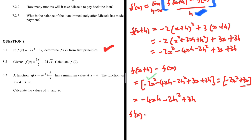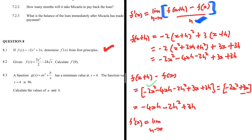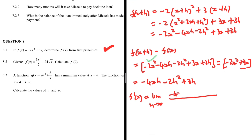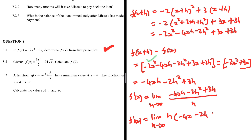Now we substitute back into f prime of x: f prime of x equals the limit as h tends to zero of (-4xh - 2h² + 3h) divided by h. At this point we take h as a common factor from the numerator so that the h on the numerator and the h on the denominator cancel out. If they don't cancel, something is wrong. Factoring out h from the numerator gives (-4x - 2h + 3).